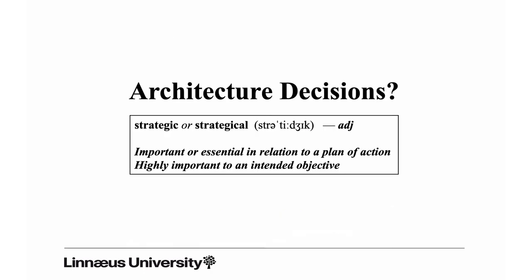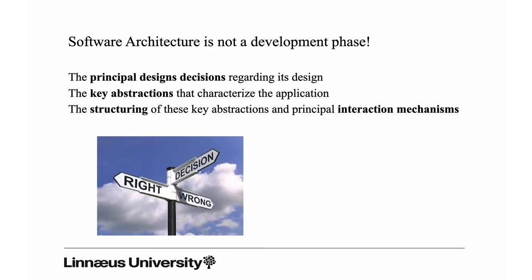Architectural decisions are the strategic decisions that designers, managers, executives, and also to some extent regular developers make during the course of the project. So architecture is not a phase in development — it's a category of decisions that stakeholders make in a project. It's about the principal design decisions; it uses high-level key abstractions, so we focus more on the high level than on too many details.